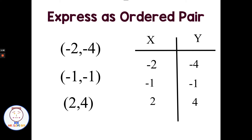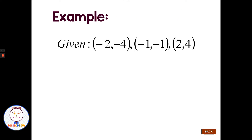Expressing an ordered pair from a t-table is super easy to do. So let's say we're given these points — negative 2, negative 4; negative 1, negative 1; and 2, 4 — and we're asked to state the domain. Well, how would we get the domain from these points? The domain is the x values; we're looking for those first points or the x's.